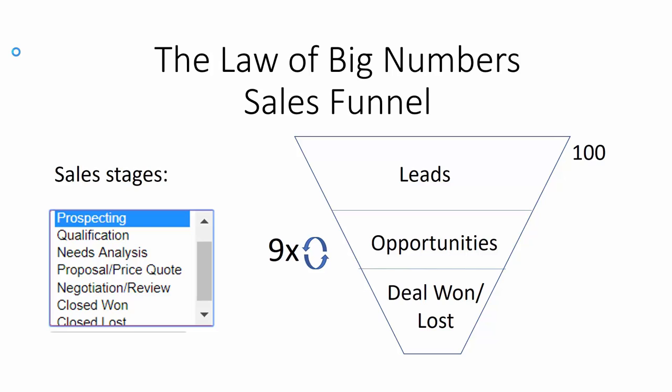Now the big numbers come into the picture. Let's start with 100 leads. If we choose the leads carefully, we may be able to convert these leads into about 50 opportunities. From the 50 opportunities, we will generate about 5 deals won. We boil 100 leads down to only 5 deals won. These figures are quite accurate for application in practice.